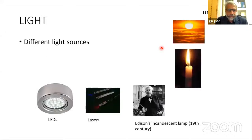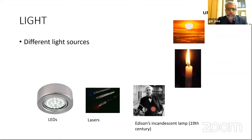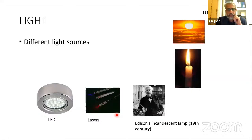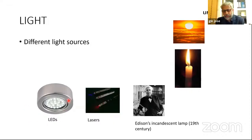We all know what light is, and there are different sources of light. It starts with the sun, fire-produced light like candles, and other types of fires. Then came a huge change in the production of light — the invention of the incandescent lamp. Then came lasers in the middle of last century, and now we are using a lot of LED lamps for day-to-day lighting.